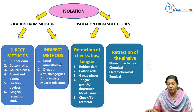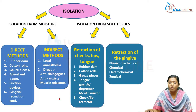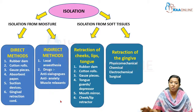Under indirect methods, chemical agents and drugs have a vasoconstrictor effect, decreasing the flow of saliva. These include local anesthetic drugs, anti-sialagogue drugs that reduce salivary flow, anti-anxiety drugs, and muscle relaxants. All these drugs have a vasoconstrictor effect and reduce overall salivary flow.